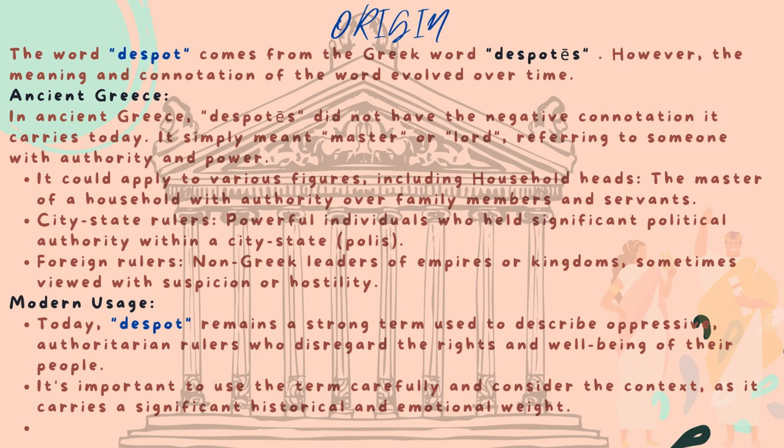It could apply to various figures, including household heads — the master of a household with authority over family members and servants — city-state rulers, powerful individuals who held significant political authority within a city-state (polis), and foreign rulers, non-Greek leaders of empires or kingdoms, sometimes viewed with suspicion or hostility.